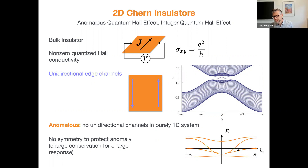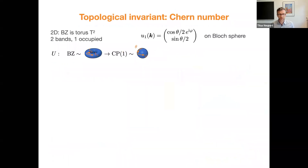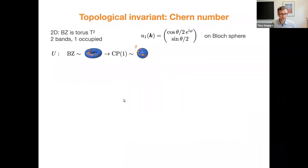This is anomalous in the sense that any purely one-dimensional system would always have left movers and right movers in equal number. A periodic one-dimensional band structure must always have an equal number of left and right movers at any chemical energy. So a single left or right mover found on the edge of a 2D Chern insulator is anomalous. Here we don't need any symmetry to protect this topology.